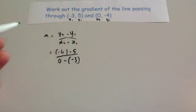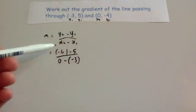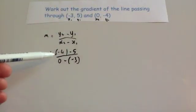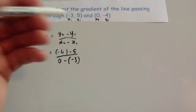Just making sure that you're putting the signs in the right place. So it was y2, which is minus 4, I've put that in brackets, subtract 5, over 0 subtract minus 3.